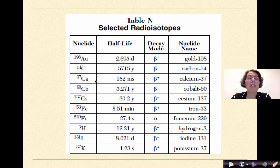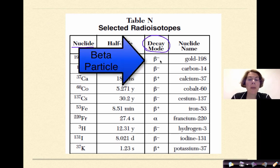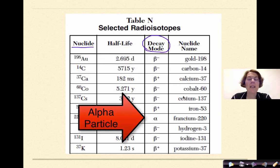Here is Table N, which gives us a lot of information. We have the nuclide — basically the symbol and the atomic mass of the isotope we're looking at. It provides the half-life, which we see in days, years, milliseconds, minutes, and different units of time. Then it gives us a very important piece of information, which is the decay mode. Knowing how to use the decay mode is really important — it tells us what type of particle is going to be released: whether it is a beta particle, a positron, or an alpha particle. Finally, it gives us the nuclide name, matching the symbol to the name with the atomic mass.